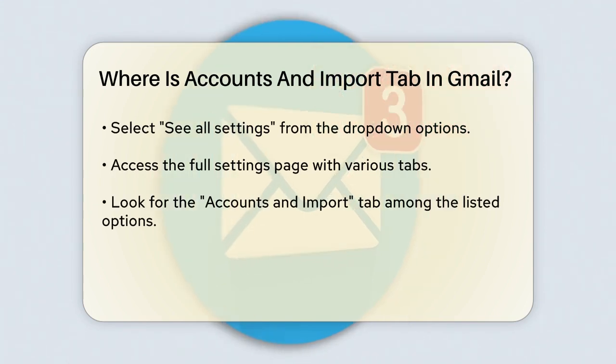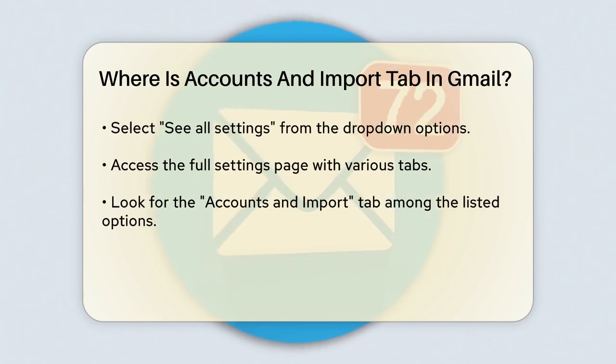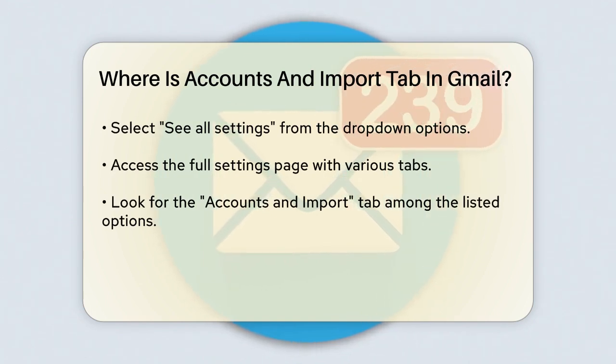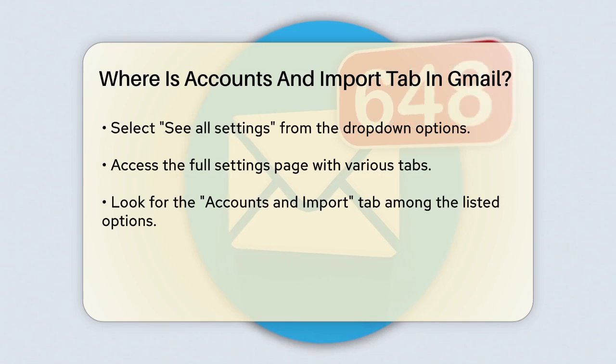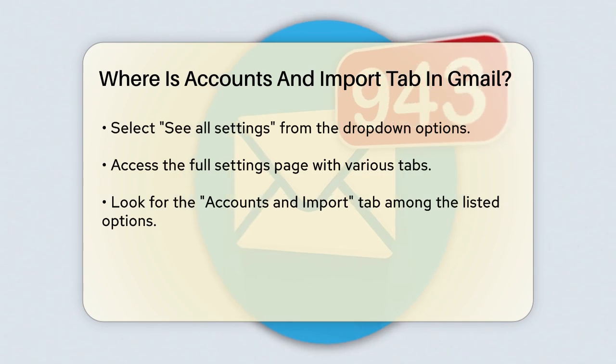From this drop-down menu, select See All Settings. This will take you to the full settings page where you can manage all your Gmail preferences.